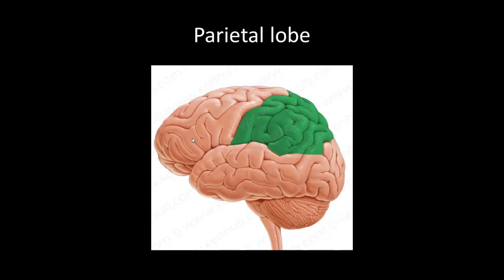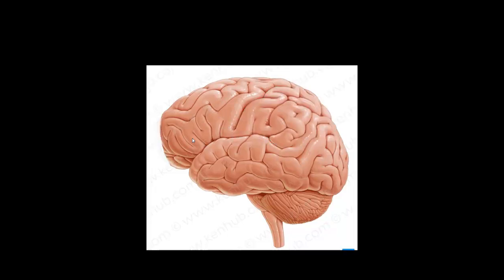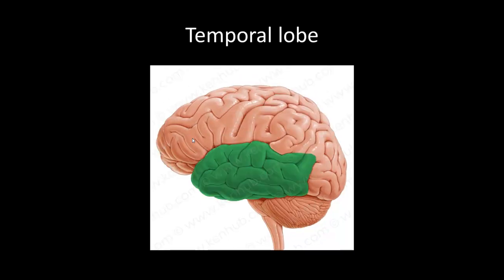Next we have the parietal lobe, which has a cortex for visual, auditory, and spatial integration, and also a primary and association sensory cortex. Next objective is the temporal lobe. This has a primary and secondary auditory cortex, along with Wernicke's area, which is involved in speech comprehension.